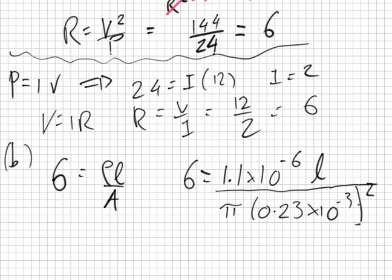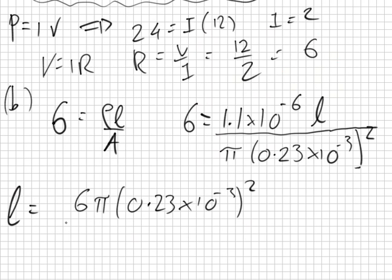So we'll get this for L. L equals 6 pi 0.28 times 10 to the minus 3 squared, all over 1.1 times 10 to the minus 6. The radius is 0.28. Oh sorry, I wrote it down wrong.